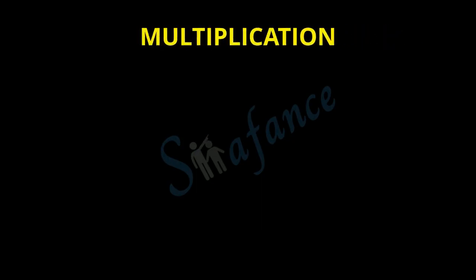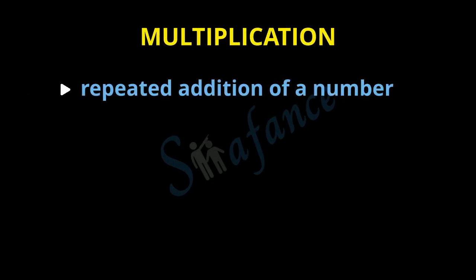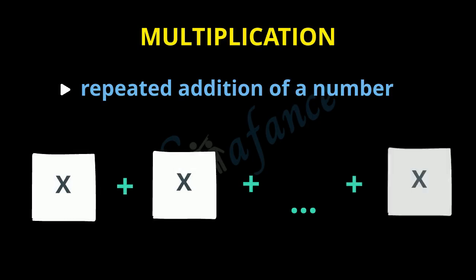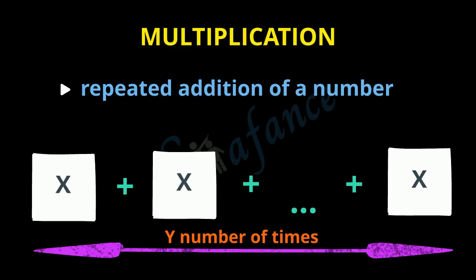In this video we will see multiplication on number line — how we multiply numbers on a number line and how we arrive at the result of multiplication. The general idea of multiplication is the repeated addition of a number, where we add the number to itself a repeated number of times. When we multiply x by y, that means we are repeating the addition of x, y number of times.